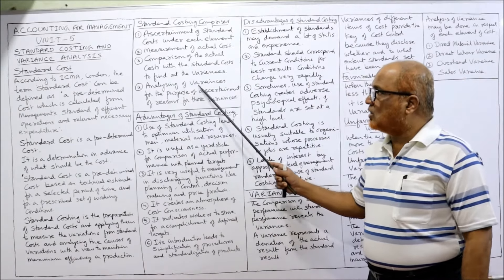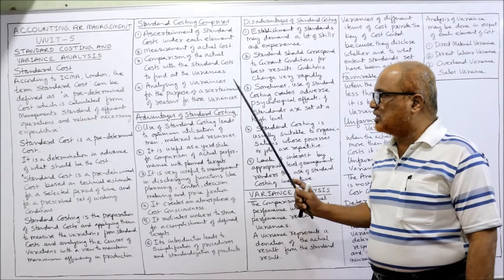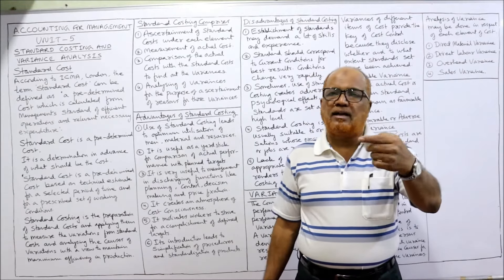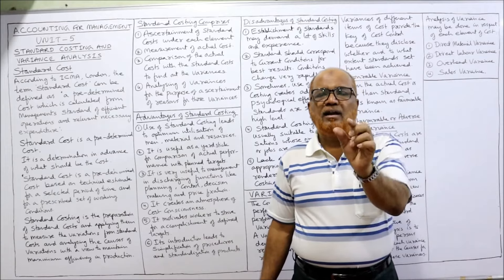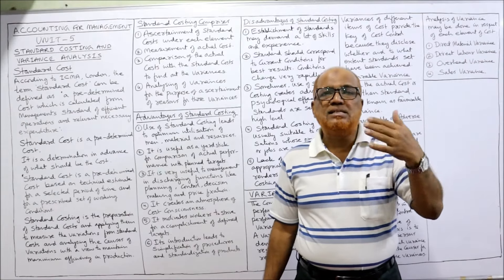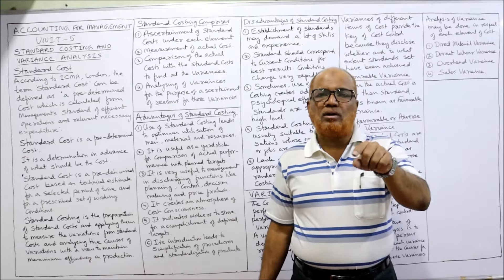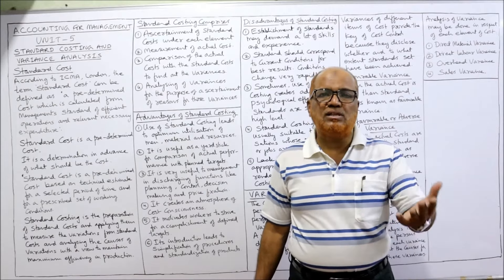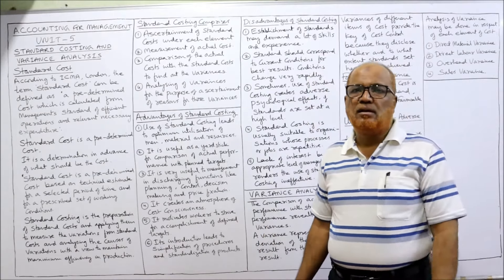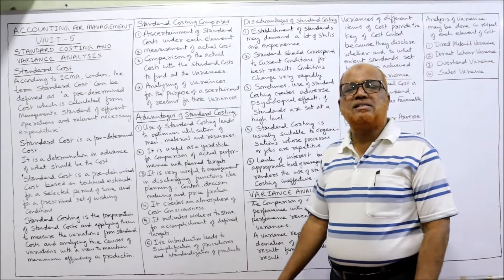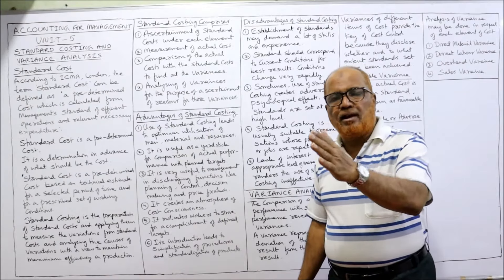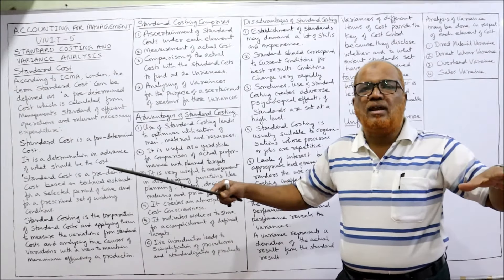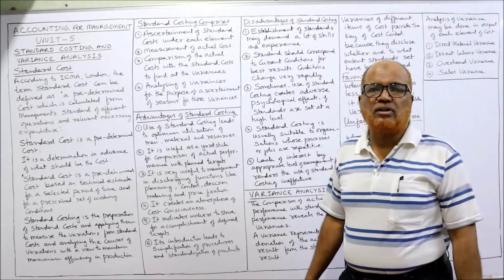Fourth: analyzing the variances for the purpose of ascertaining the reasons for these variances. Simply calculating the predetermined cost, calculating the actual cost, and comparing them is not the end of the matter. After finding out the variation, we want to find out the reason for it — why the material cost is more compared to the standard cost. All four steps come under standard costing: calculating standard cost, calculating actual cost, comparing them, finding the variation, then analyzing the variation to find out the reasons.